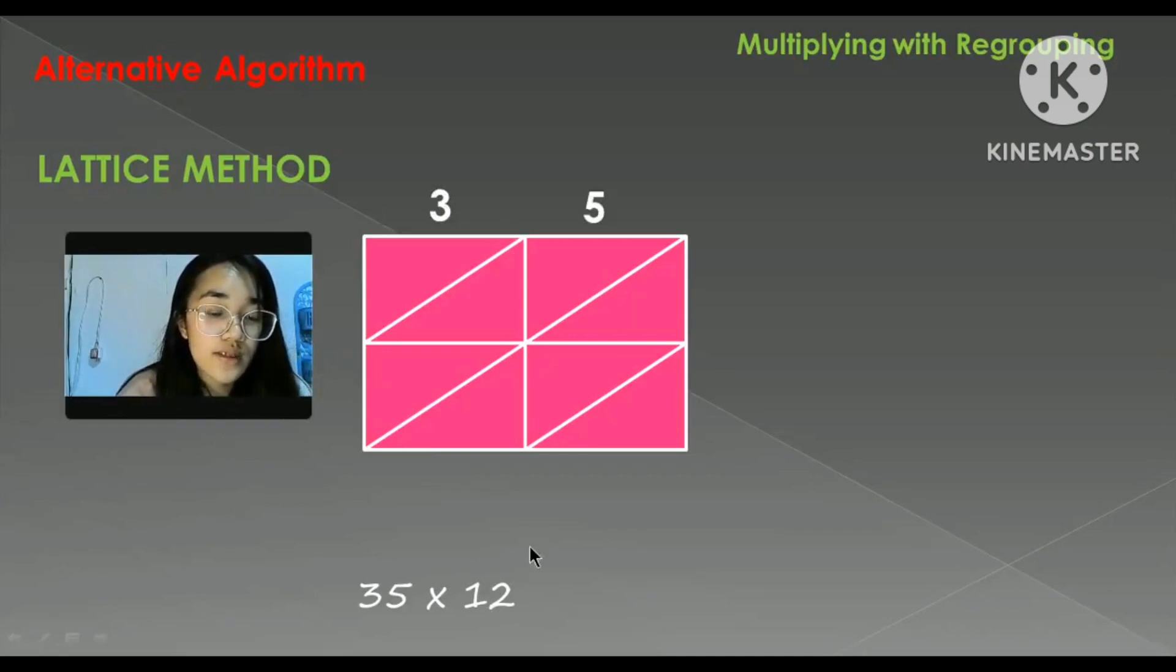And the multiplier, which is 12, we will write it here at the side. Now we will also multiply, but with one digit number, which is easier. So 5 times 1 is equal to 5. Since it's only one digit, we put 0 here.